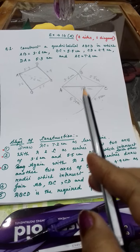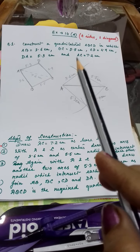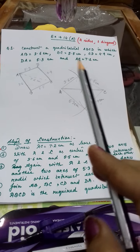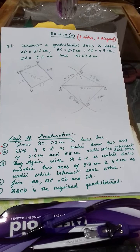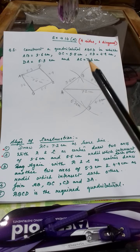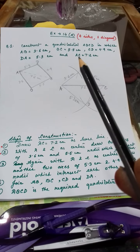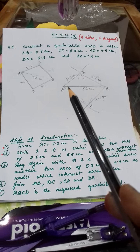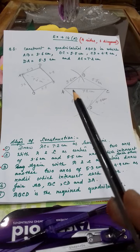After drawing this rough sketch, you will start with the construction. First, in the construction you have to consider one baseline. Which measurement will you consider as the baseline? Generally we consider the greatest measurement — the biggest one. Here, out of these five measurements, diagonal AC = 7.2 cm is the greatest, so this one I have considered as the baseline.